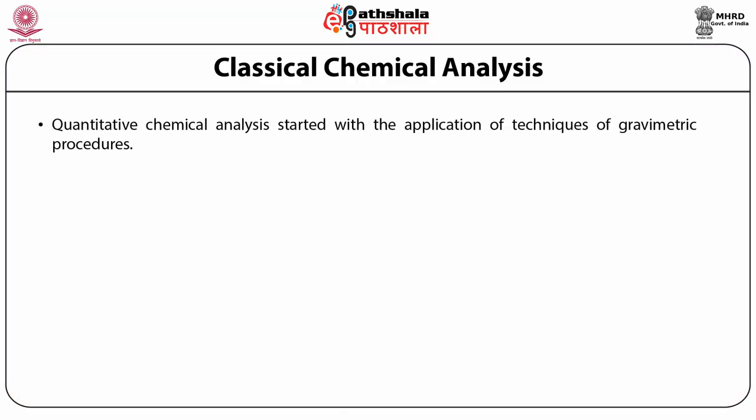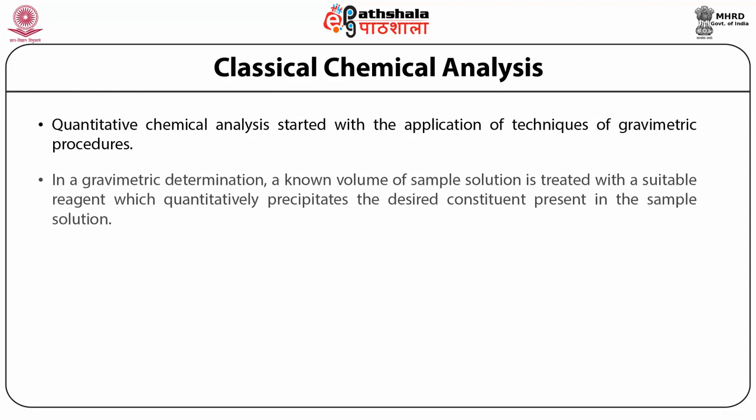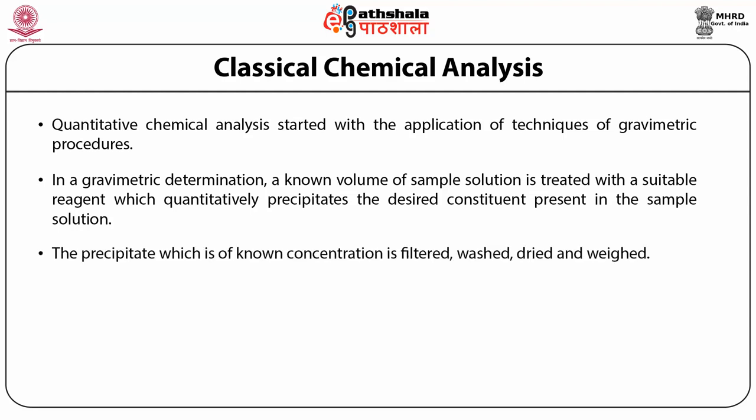Quantitative chemical analysis started with the application of gravimetric procedures. In a gravimetric determination, a known volume of sample solution is treated with an excess of a suitable reagent which quantitatively precipitates the desired constituent present in the sample solution. The precipitate of known composition is filtered, washed, dried, and weighed.